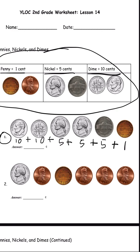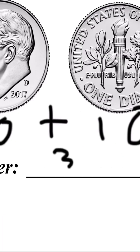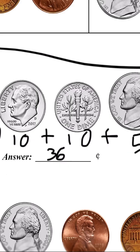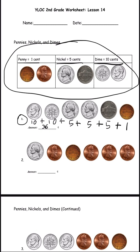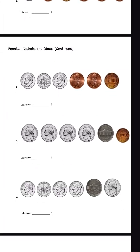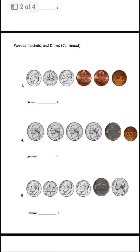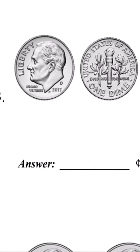Twenty-five plus one is twenty-six, twenty-six plus five is thirty-one — wait, let me redo: ten plus ten is twenty, twenty plus five is twenty-five, twenty-five plus five is thirty, thirty plus one is thirty-one... thirty plus five is thirty-five, and thirty-five plus one is thirty-six. So the answer should be thirty-six cents. Let's move on to the next page — it's basically the same thing.